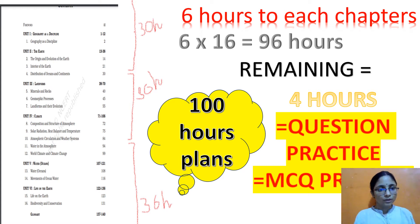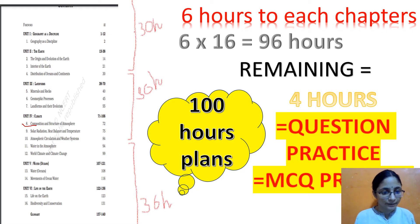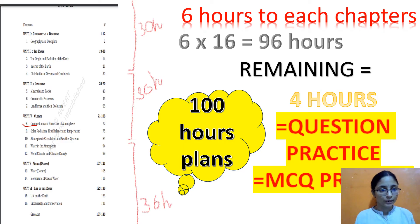For today, among all these chapters, we are going to discuss chapter number 8 of unit number 4, that is climate. Chapter number 8 is the composition and structure of the atmosphere.